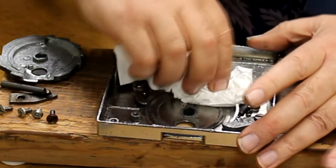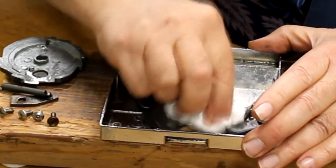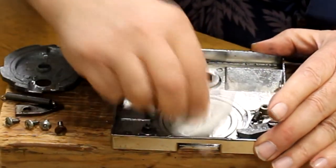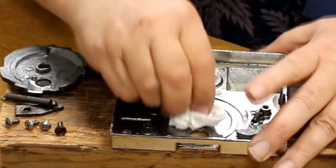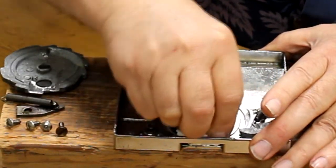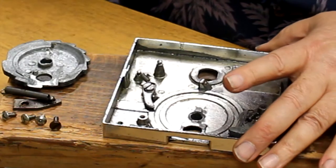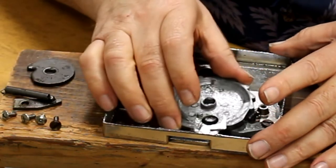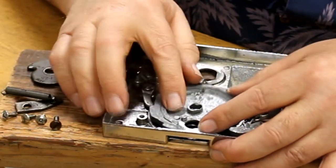And we can clean up some of this old grease on here. Like that. Put the coin wheel back in.